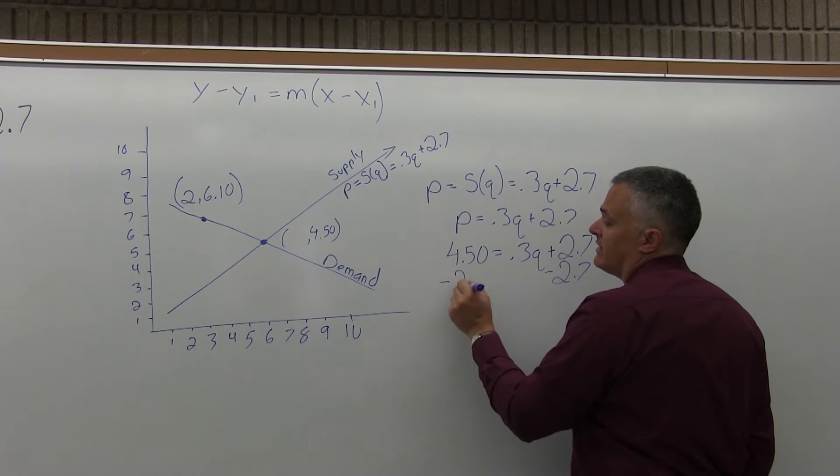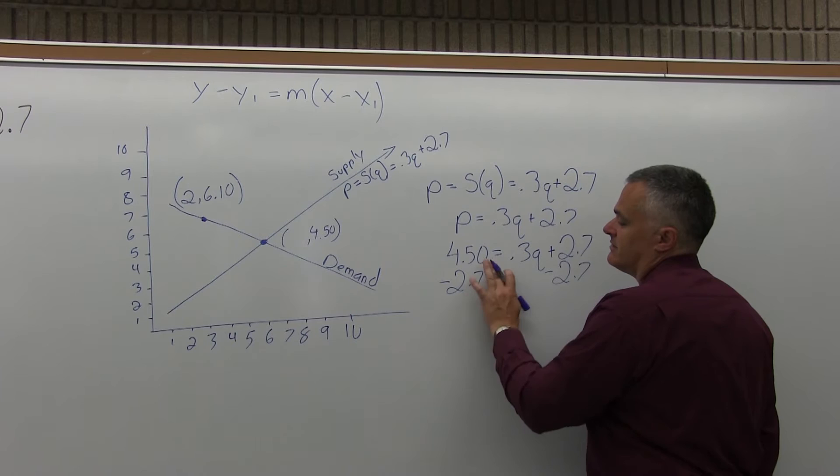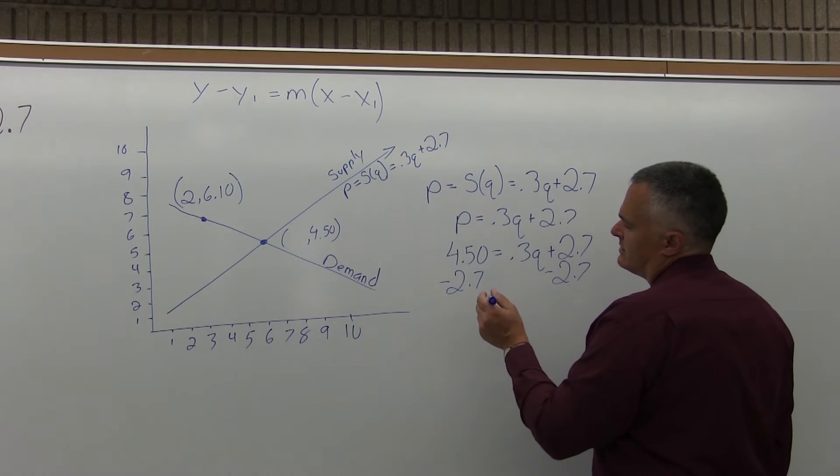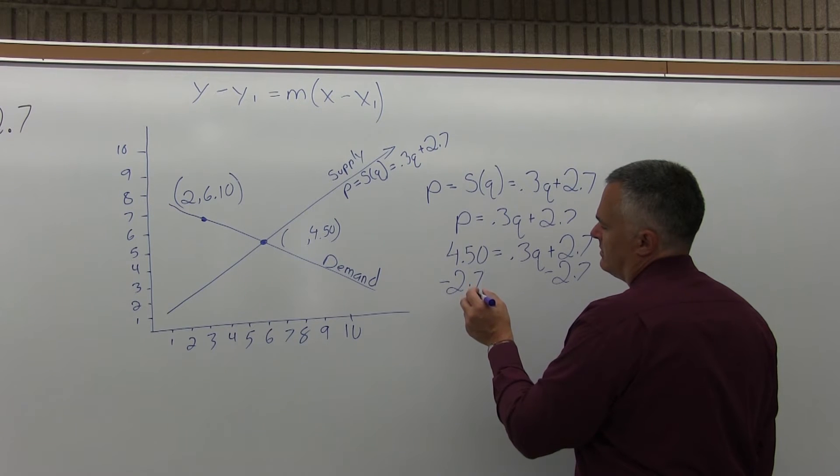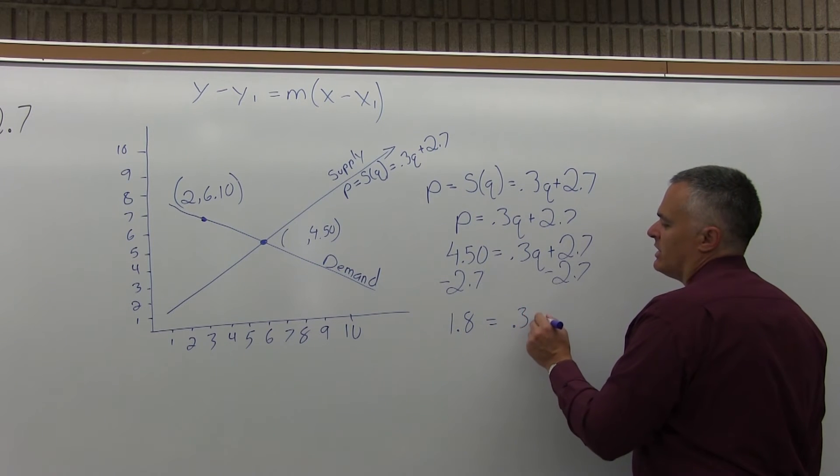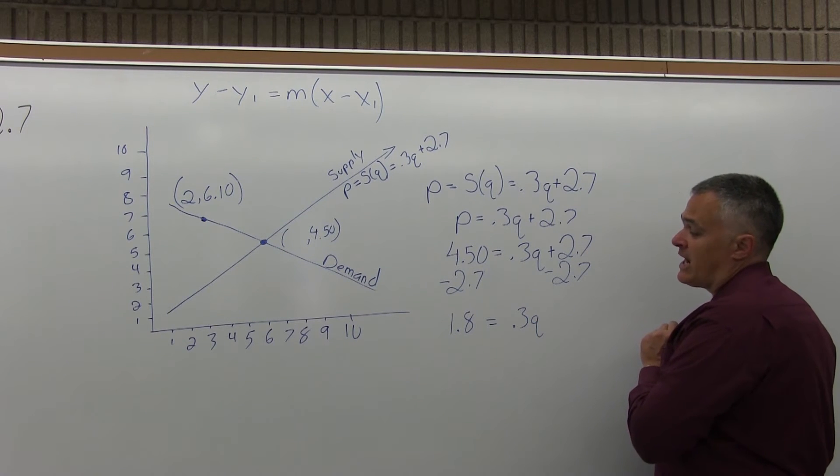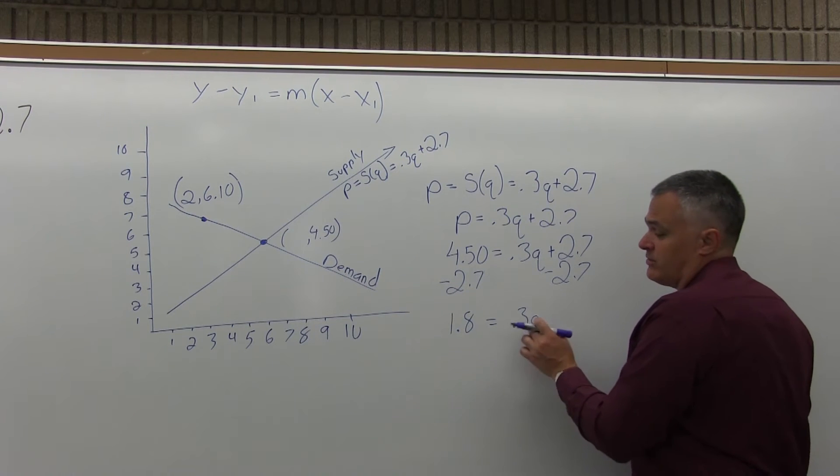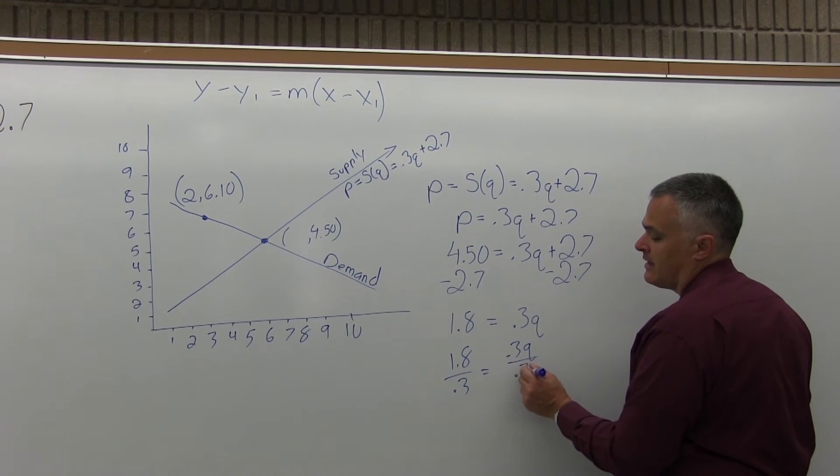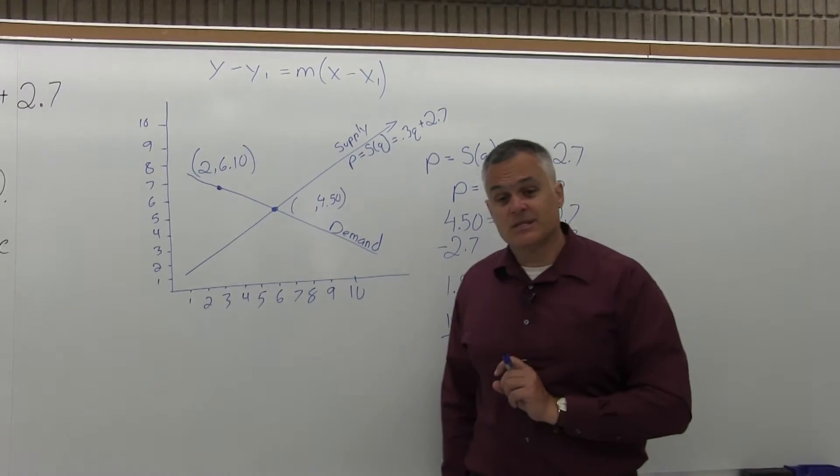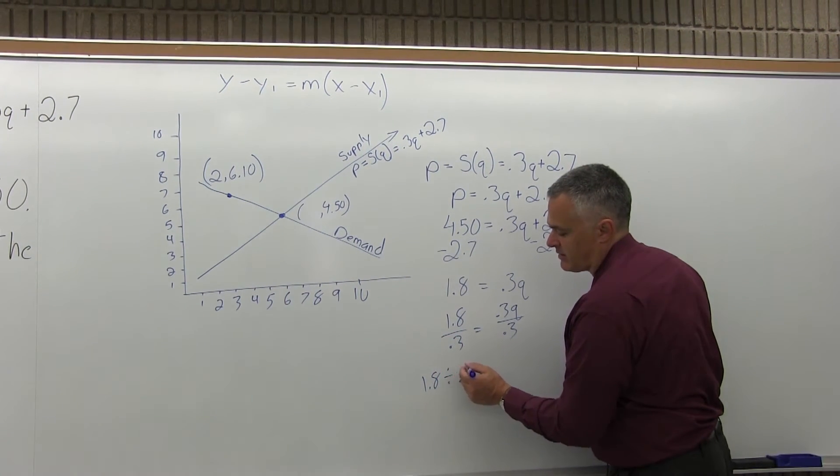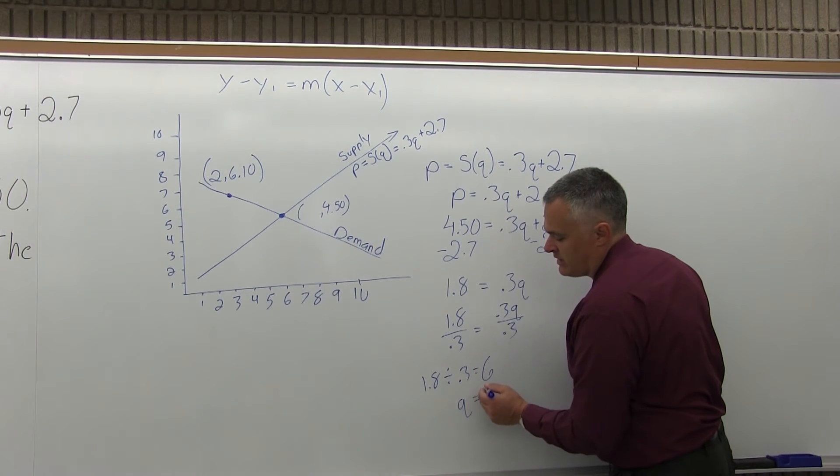When I subtract, I get 1.8 equals 0.3Q. If 1.8 equals 0.3Q, I want Q, not 0.3Q, so let me divide out the 0.3. 1.8 divided by 0.3 equals 6. You can just ignore the decimals, 18 over 3, or use your calculator. Q equals 6.